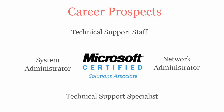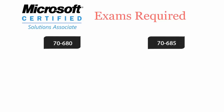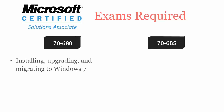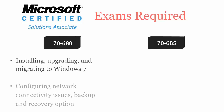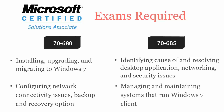To be a Microsoft Windows 7 Enterprise Desktop Support Technician certified professional, you have to pass two exams: 70680 and 70685. Exam 70680 covers installing, upgrading and migrating to Windows 7, configuring network connectivity issues, and backup and recovery options, while 70685 covers identifying the cause of and resolving desktop application, networking and security issues, and managing and maintaining systems that run Windows 7 client.